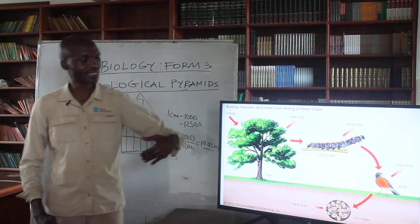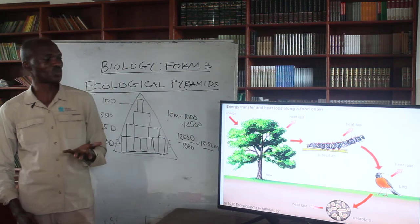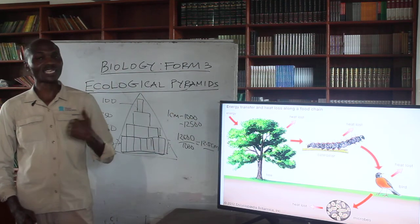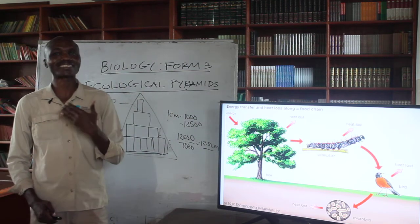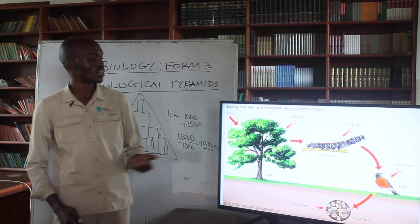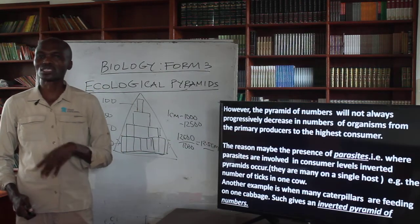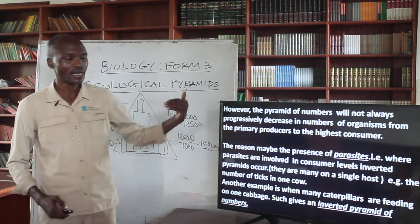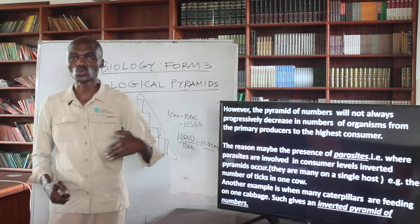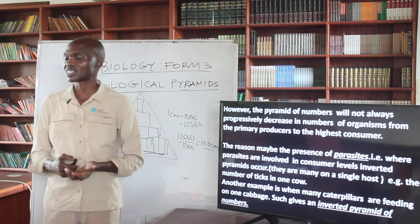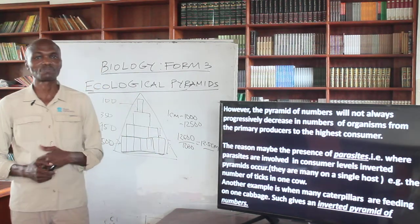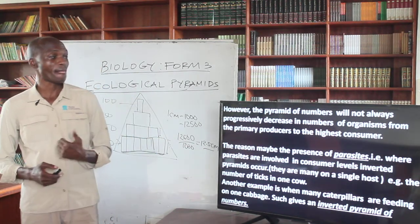The final consumer ends up consuming a much smaller amount of energy compared to the original amount of energy that was converted into food materials by the plant.